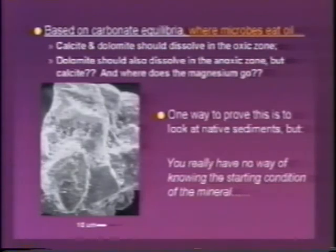I've looked at that picture for 10 years and I still don't know what it's telling me. I don't know if that example of calcite has dissolved, precipitated, both or neither, because I don't know what it looked like the day before I grabbed it, and I don't know what it looked like the day before the oil spill happened. I can't tell what happened to it. So that wasn't a very effective way to do it. You could look at feldspars and maybe get some idea, but the carbonate system is just too reactive.